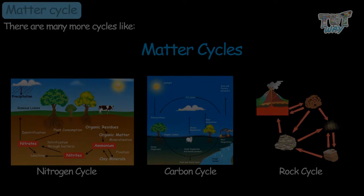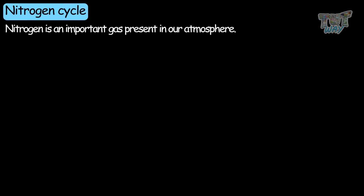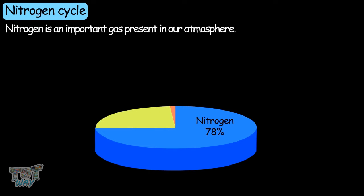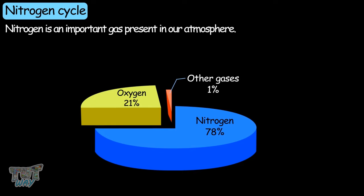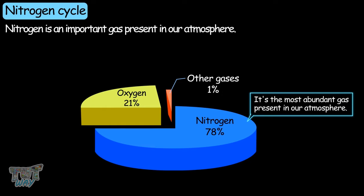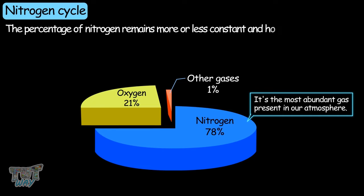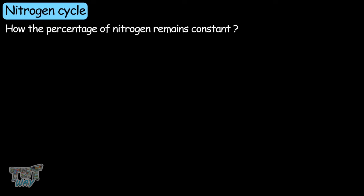Today, we will be learning the nitrogen cycle. Nitrogen is an important gas present in our atmosphere. Our atmosphere contains 78% nitrogen, 21% oxygen, and the rest of the gases are present in traces. So nitrogen is the most abundant gas in our atmosphere. The percentage of nitrogen remains more or less constant — let's study the nitrogen cycle to understand how.